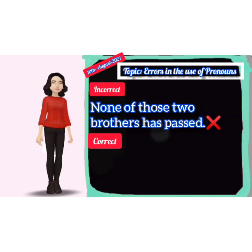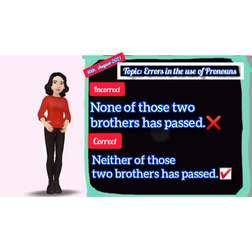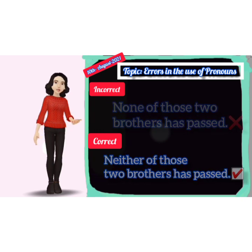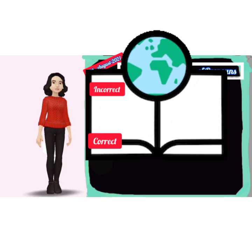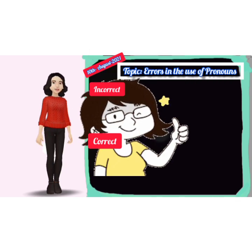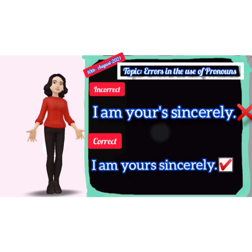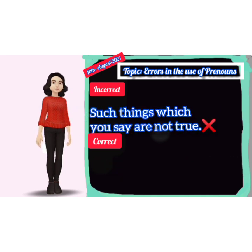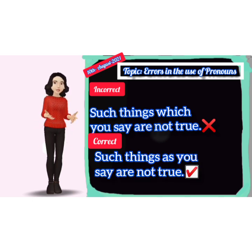Sixteenth: incorrect — 'None of those two brothers has passed.' Correct — 'Neither of those two brothers has passed.' So friends, if you are enjoying this video and it is helpful and informative, then press the like icon. I am yours sincerely. Seventeenth: incorrect — 'Such things which you say are not true.' Correct — 'Such things as you say are not true.'